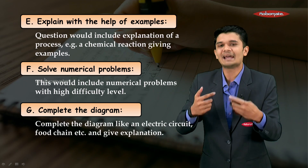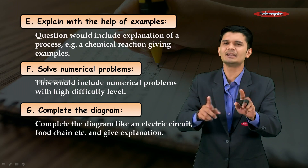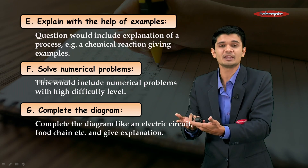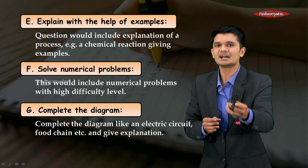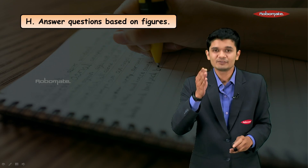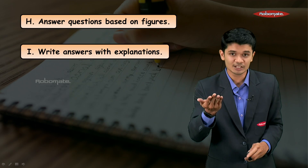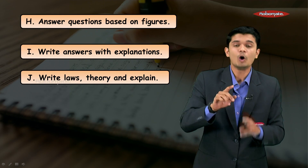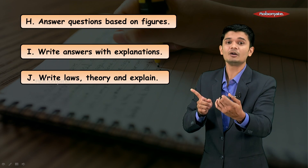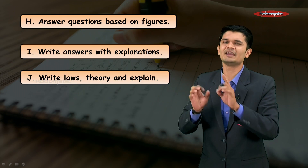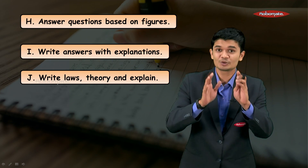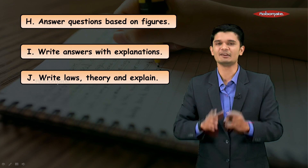You'll also come across complete the diagram — here you'll have an incomplete diagram and have to complete it from memory. Examples include electric circuits or food chains. Make sure if an explanation is asked, give it carefully. Different question types also include answer questions based on figures with explanations. Some questions may also appear as write the laws, write the theory behind the law, and explain it. We have covered these laws carefully throughout the year, so study them from all chapters very carefully.